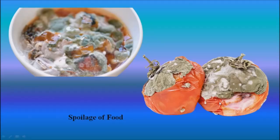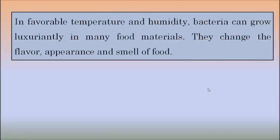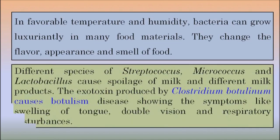Friends, the next harmful activity of microorganisms is spoilage of food. In favorable temperature and humidity, bacteria can grow luxuriantly in many food materials. They change the flavor, appearance and smell of the food. Different species of Streptococcus, Micrococcus and Lactobacillus cause spoilage of milk and different milk products. The exotoxin produced by Clostridium botulinum causes botulism, a disease showing symptoms like swelling of tongue, double vision and respiratory disturbance.